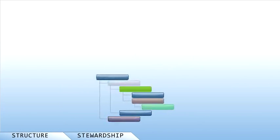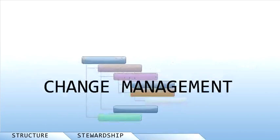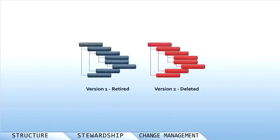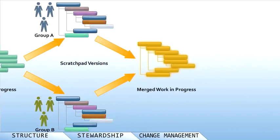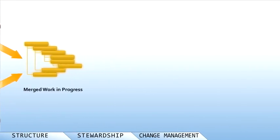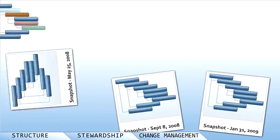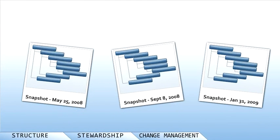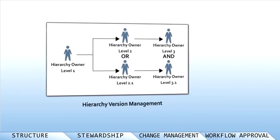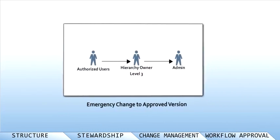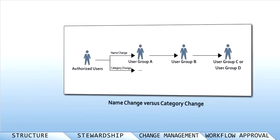The third component involves change management. Different requirements require different change management capabilities, such as active versioning of hierarchies, creating archive versions, or the standard practice of effective dating or slowly changing hierarchies. The fourth component is equally critical: the implementation of the workflow approval process — standard approval processes, emergency change processes, and alternate routes depending on type of change.